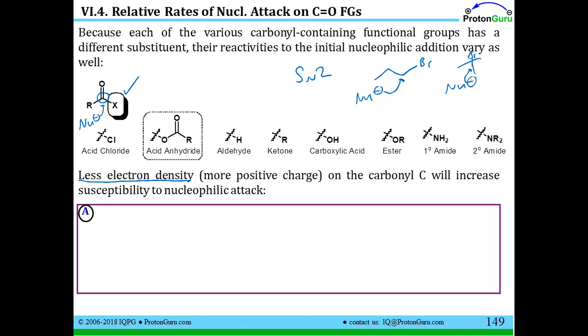The steric encumbrance of more branches coming off of the site you're trying to attack will block the nucleophile from being able to access the carbon. So the bigger the groups are beside the carbonyl carbon, probably the slower that nucleophile will be in trying to attack.